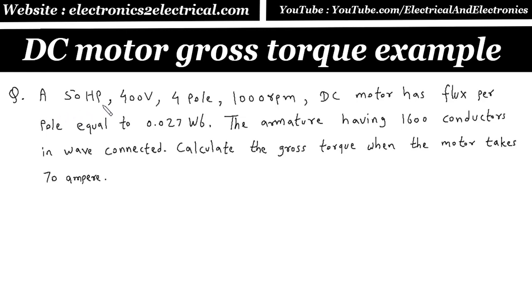A 50 HP, 400V, 4 pole, 1000 rpm DC motor has flux per pole equal to 0.027 Weber. The armature having 1600 conductors in wave connected. Calculate the gross torque when the motor takes 70 ampere.